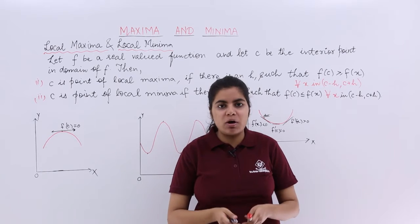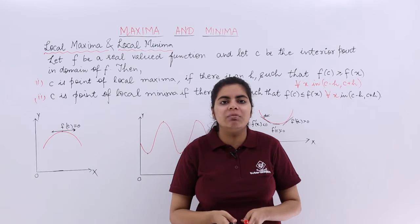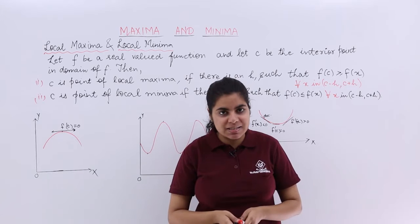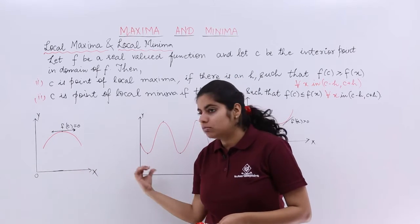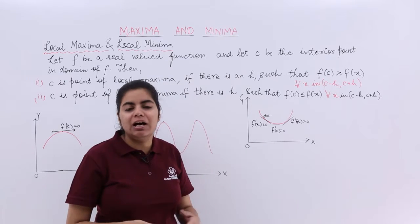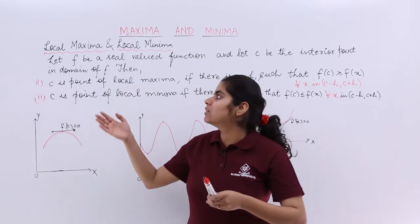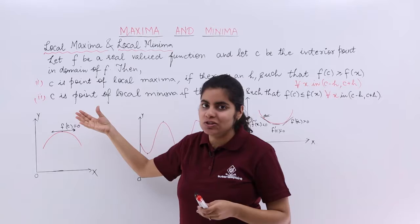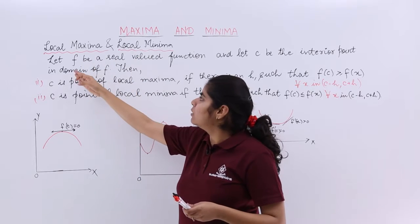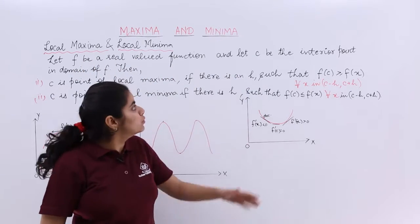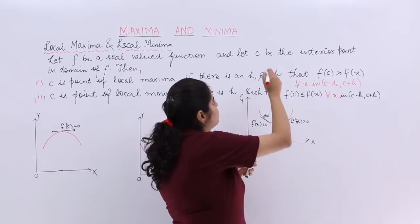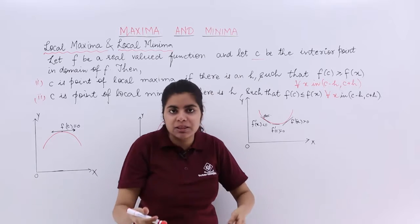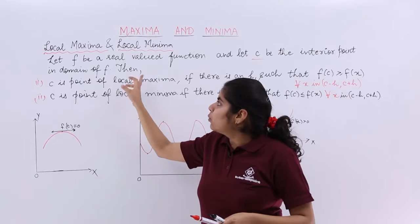In this video, let's talk about local maxima and local minima, or relative maxima and relative minima. We have one, two, and three curves or graphs in front of us and we have some theory written over here. Let's see what it has to say. It says local maxima and local minima. Let f be a real valued function and let c be the interior point. So I have c as one point which is there in the function itself, in the domain of f.